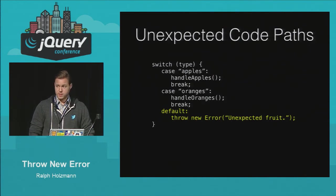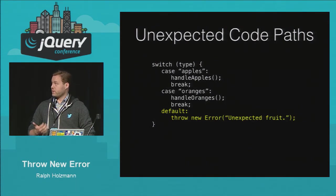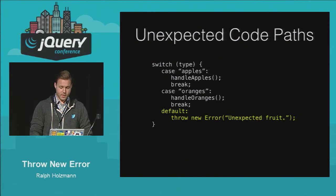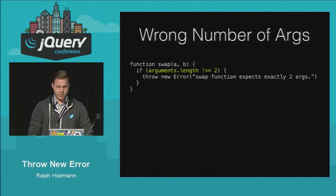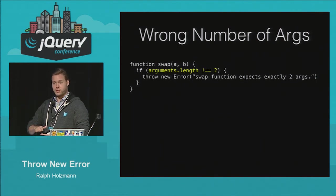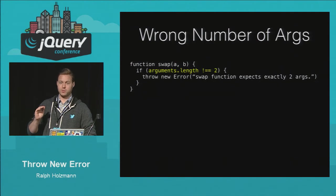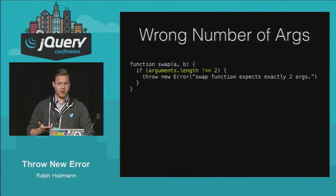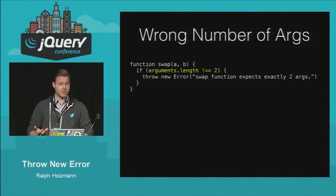Also, unexpected code paths: if there's part of your program that you know should never execute, make sure you throw an error there. For example, if you never want a switch statement to not match a value, throw an error on the default case. Wrong number of arguments is another perfect example. You'll see this a lot in frameworks like Ember and Angular, which are always adding assertions. Ember in their production build actually strips out all their assertions, because if they didn't, it would add file size to the library. In Ember 1.6 or 1.7, you'll notice their error messages are great — you can figure out what's going wrong with your program pretty quickly just by what the library throws at you.